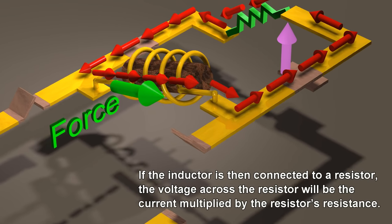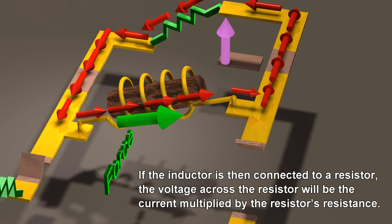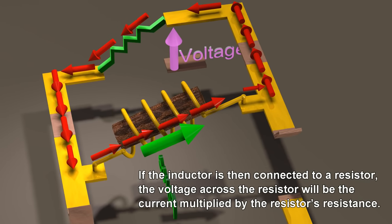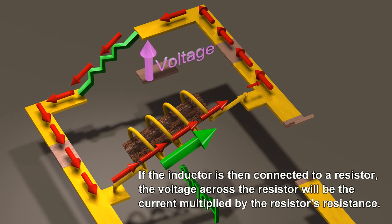If the inductor is then connected to a resistor, the voltage across the resistor will be the current multiplied by the resistor's resistance.